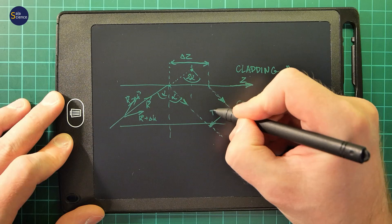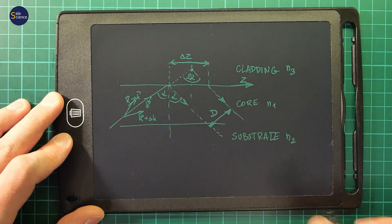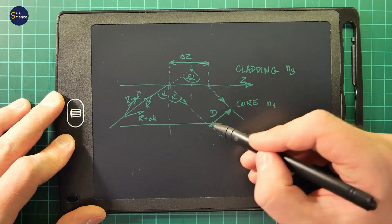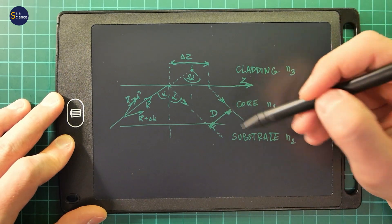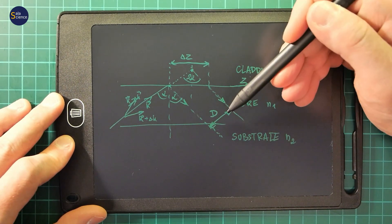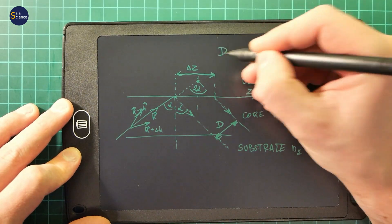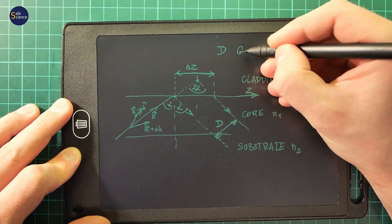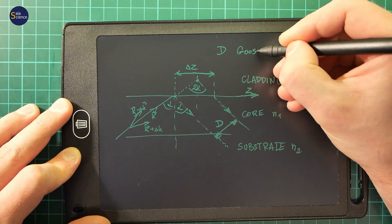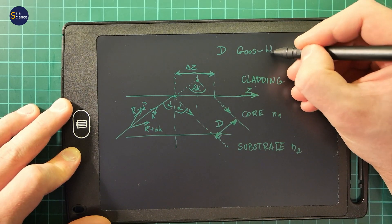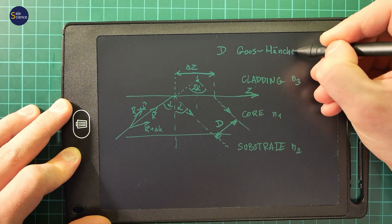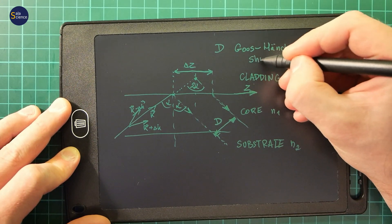And we will call it D. And this value of the spatial lateral shift is called a Goos-Hänchen shift. Historically, this D is a Goos-Hänchen shift.